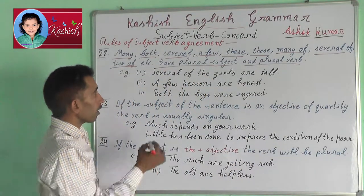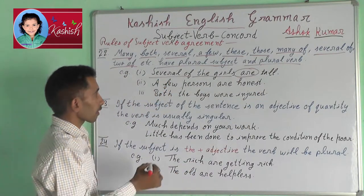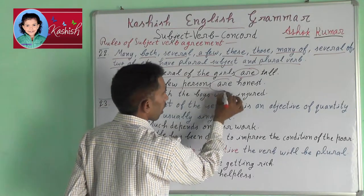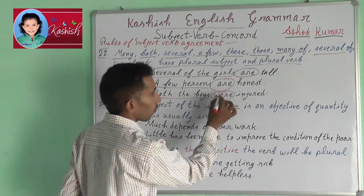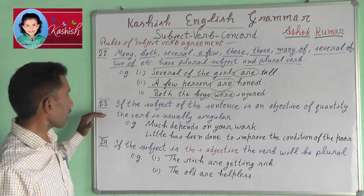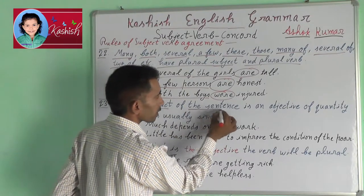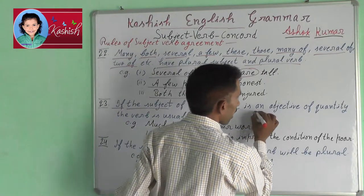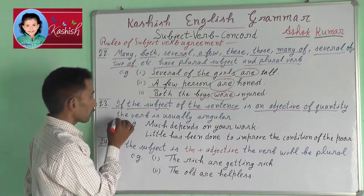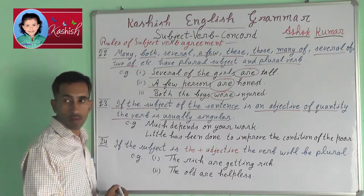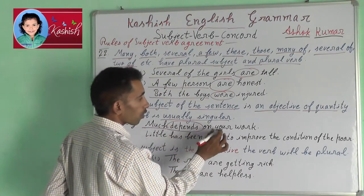For example: several of the girls are tall. A few persons are honest. Both the boys were injured. Rule 23: If the subject of the sentence is an adjective of quantity, the verb is usually singular. For example, much depends on your work.